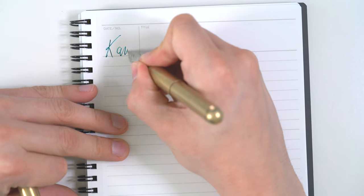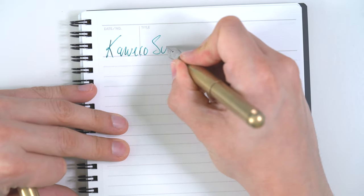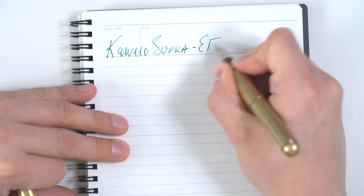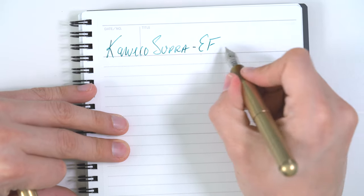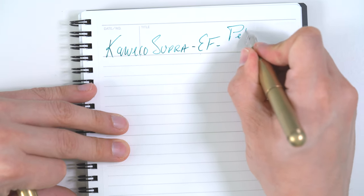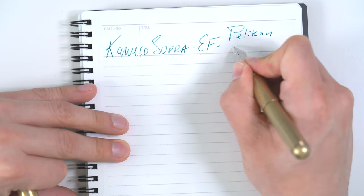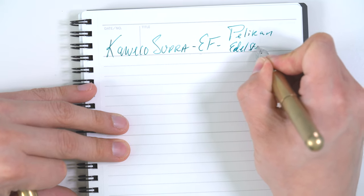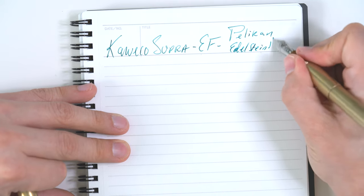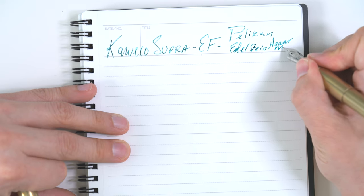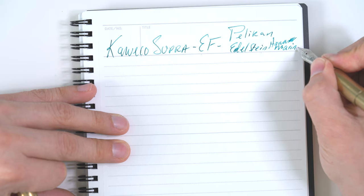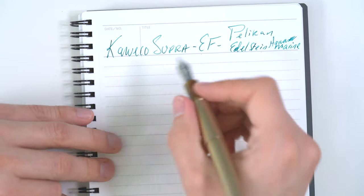All right, let's do a quick paper test here. So this is the Kaweco Supra, and this is an extra fine nib. And this is Pelican Edelstein Aquamarine.